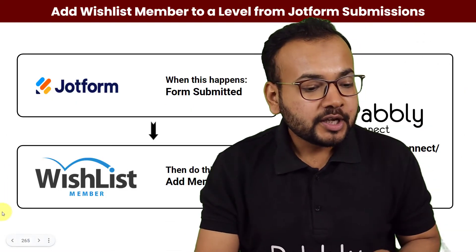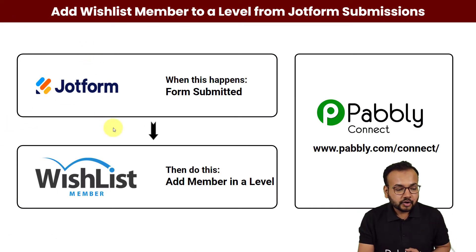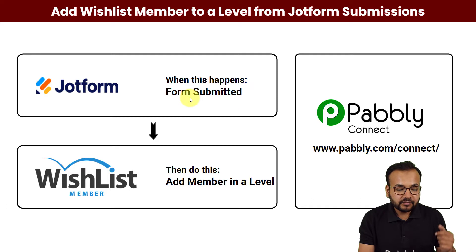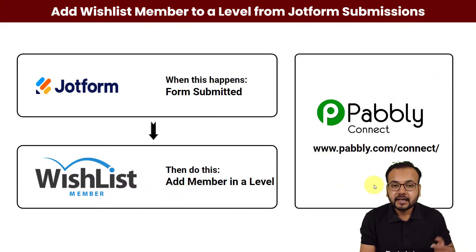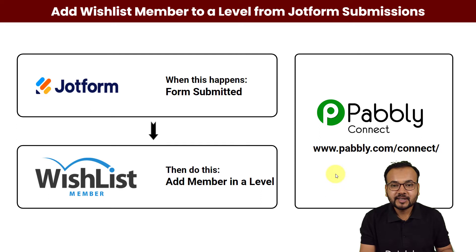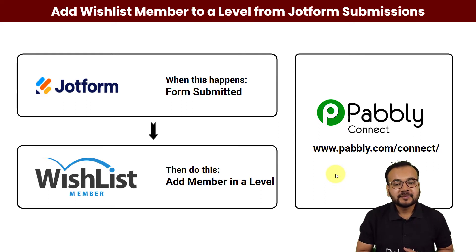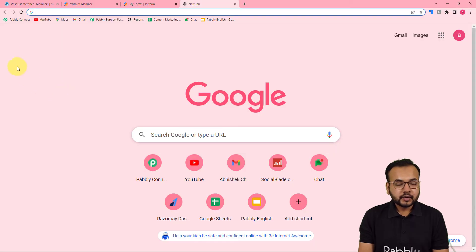Let me show you how this is going to work. The flow of this automation is: as and when any user submits your membership form, that member is going to be added at a specific level in the WishList Member plugin automatically. To make this happen, we are using Pabbly Connect, which is an integration and automation tool. The best part is you can set up this automation without any coding skills or programming knowledge.